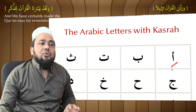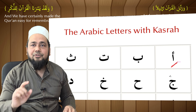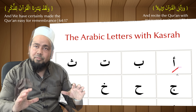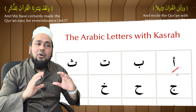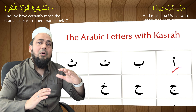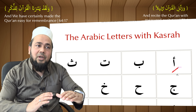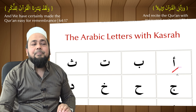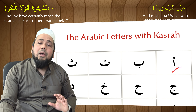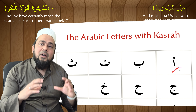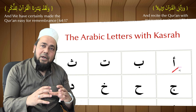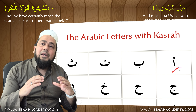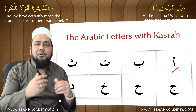This is called kasra. Remember, kasra always goes on the bottom of the letters. And kasra makes the sound like 'ee', 'ee'.